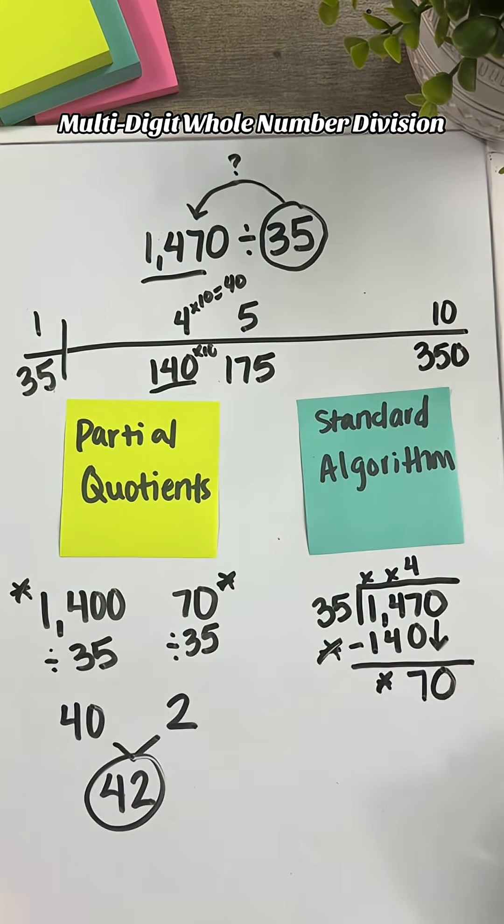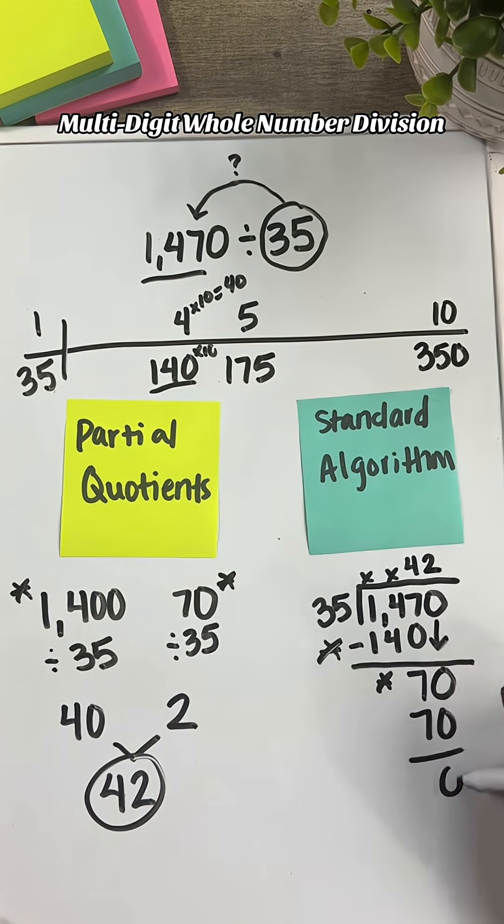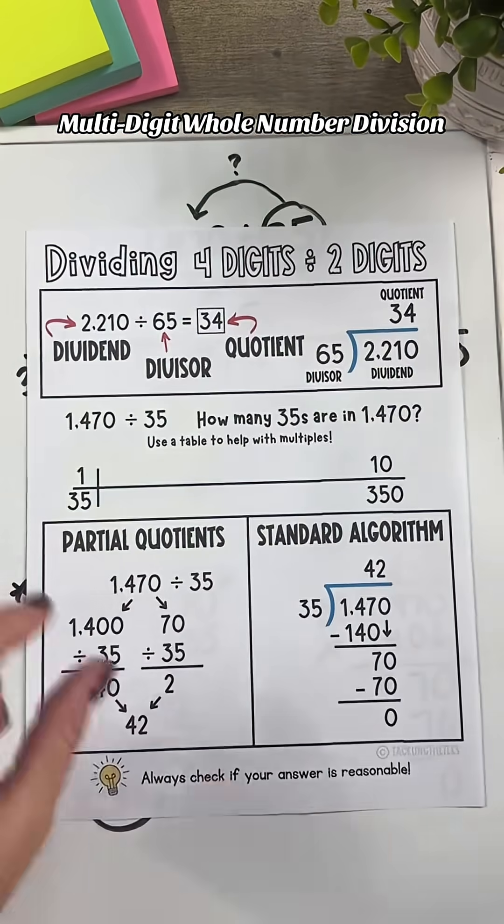And as you can see, we already did the same thing on the left side, and we'll get the same quotient of 42.